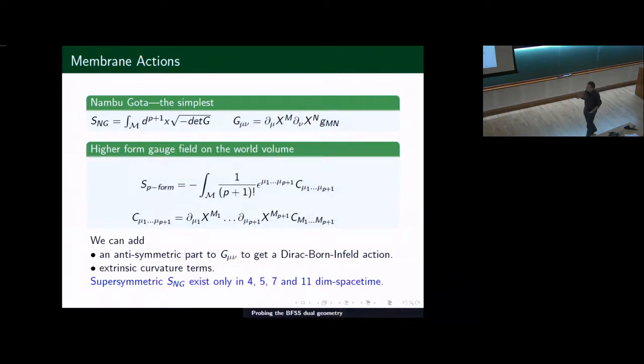So membrane actions are based on the Nambu-Goto, or one can reformulate them in terms of Polyakov formulation with a Lagrange multiplier. Basically, the world volume of the membrane is taken as the action, where the metric is the induced metric. This is a generalization of the relativistic particle action. One can add to these some higher form gauge forms. This is the analog of charging them. One can generalize them even further by adding an anti-symmetric part to the G_mu_nu, which to get Dirac-Borne-Infeld action.